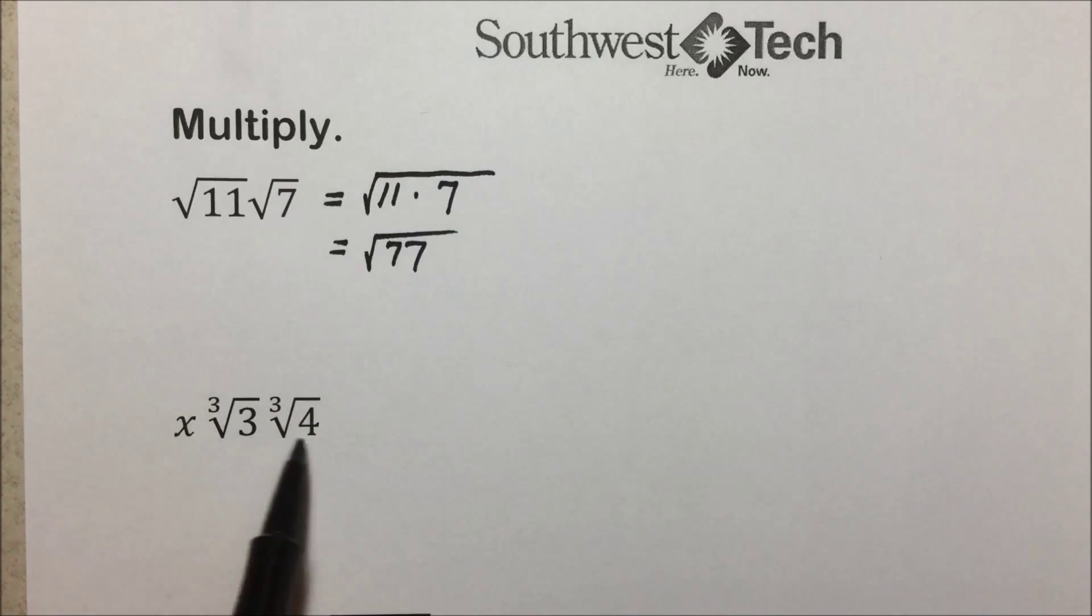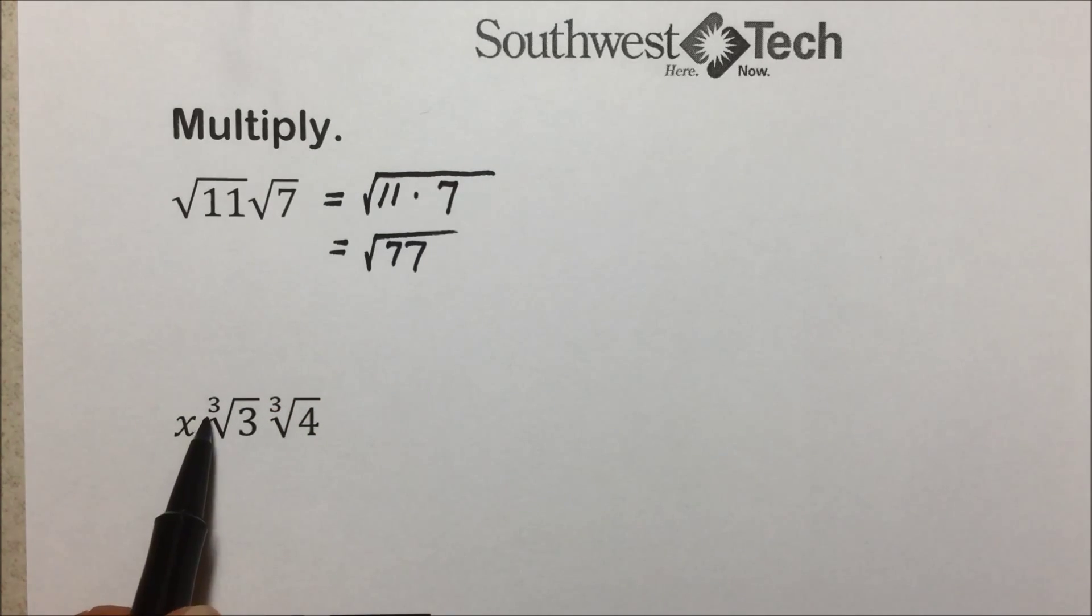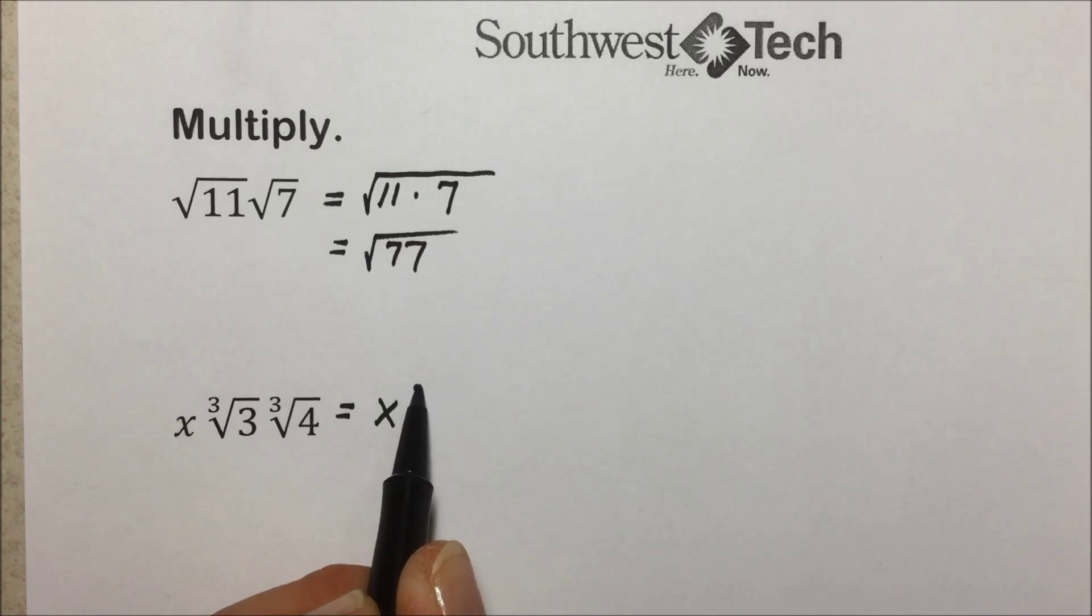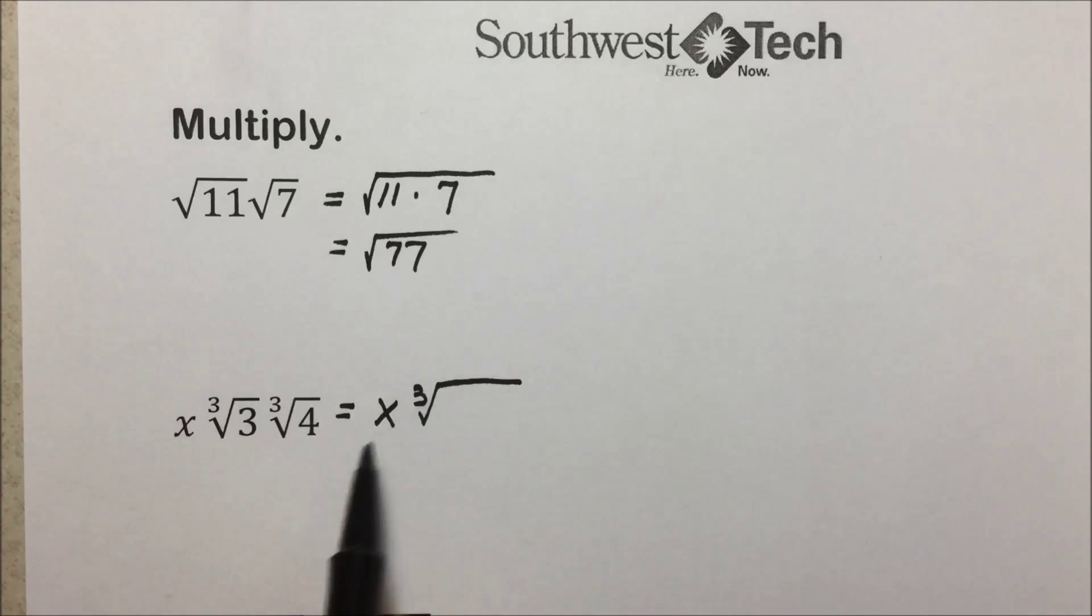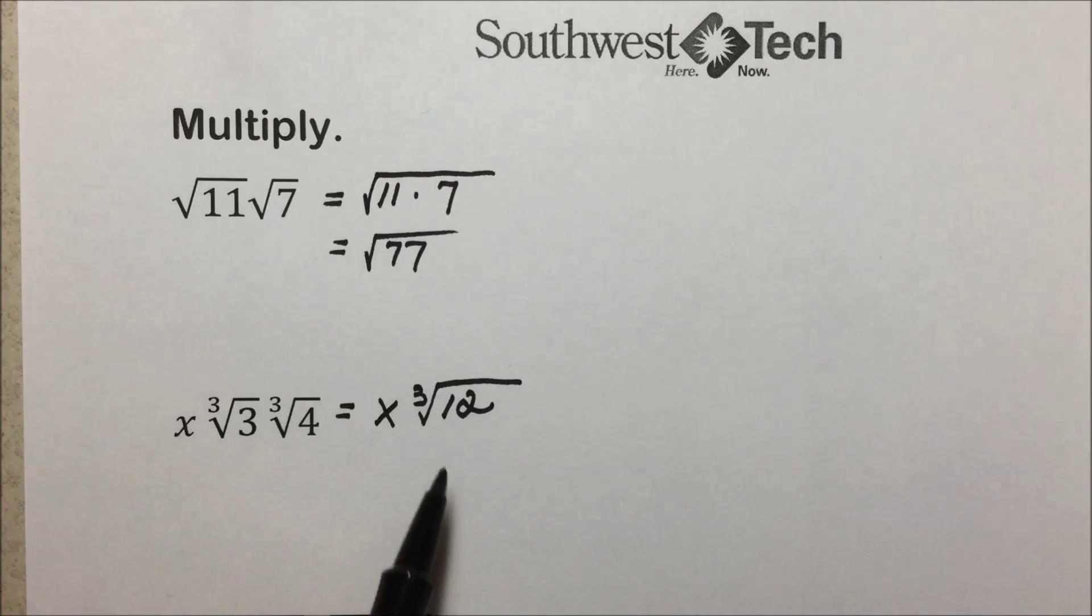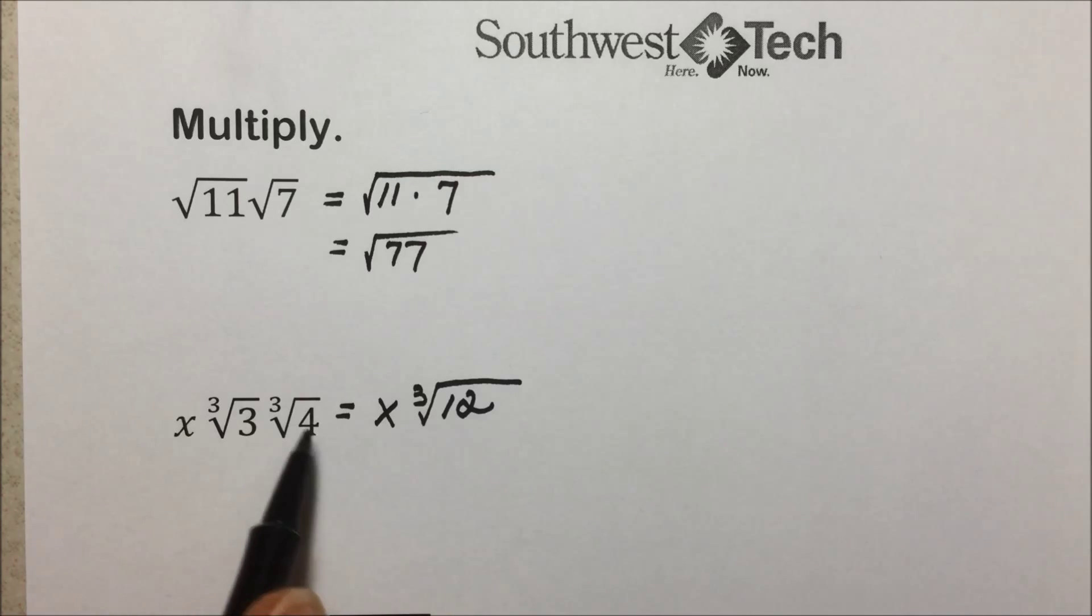In the next one, we have a product of three things. The radicals have the same index. That means we can multiply the radicands, the quantity underneath the radical, together underneath one radical, and 3 times 4 would give us 12. Now we can't simplify here. We need three of a kind. 4 has a 2 times 2, 3 is a prime number. So this is as far as we can simplify this multiplication of radicals.